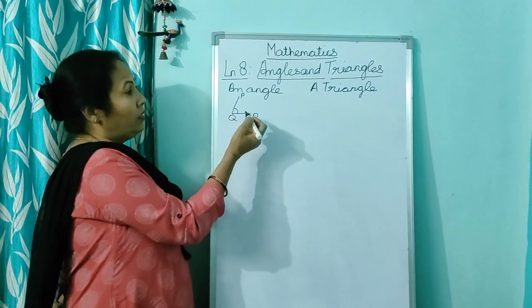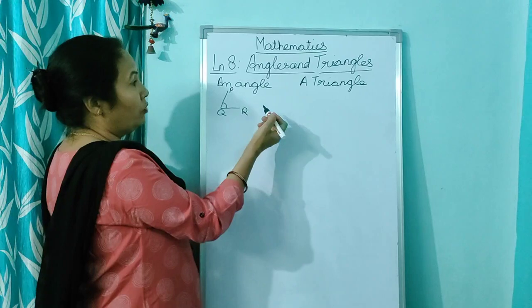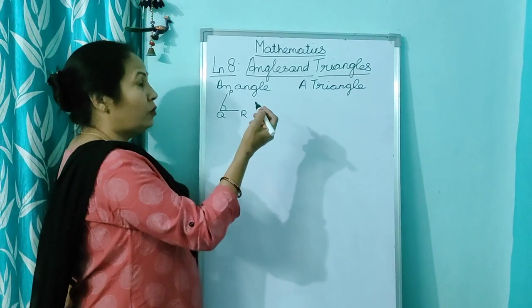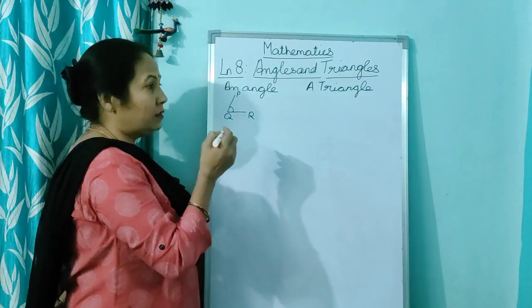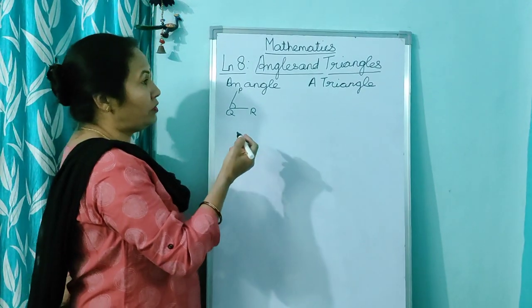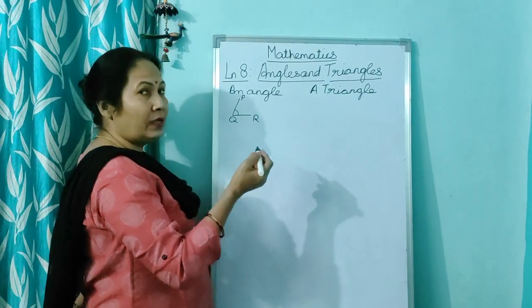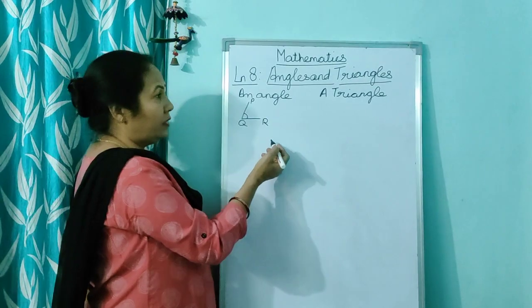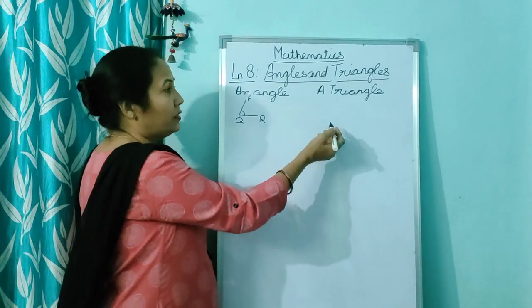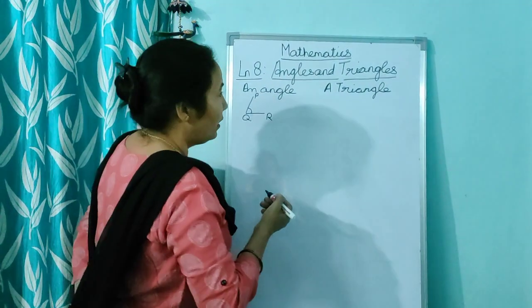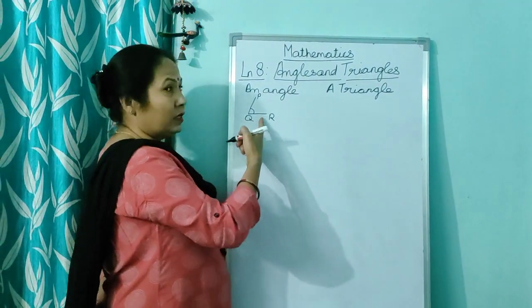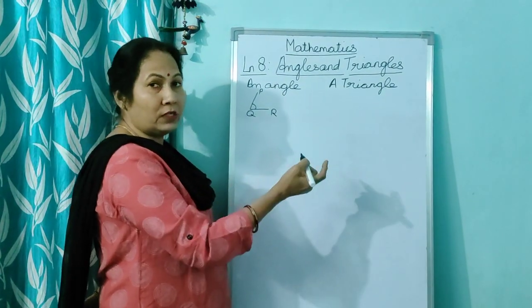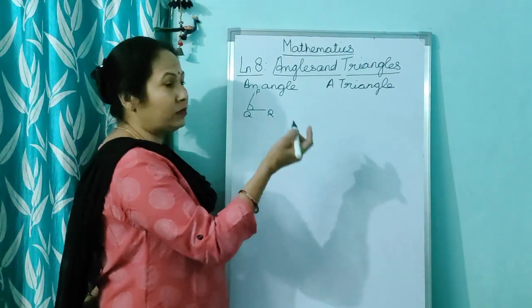Now children, I am going to show you and draw a triangle. There is a difference between the angle and the triangle. Angle is an open figure and triangle is a closed figure. But first you have to draw an angle, then you close it and it becomes a triangle.